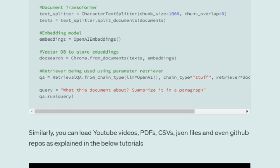We then generate embeddings using OpenAI Embeddings, use ChromaDB for creating the database, and create a RetrievalQA chain using RetrievalQA.from_chain_type. This RetrievalQA combines the functionality of the retriever as well as the LLM object provided. Eventually we can ask questions like 'What is this document about? Summarize it in a paragraph.'